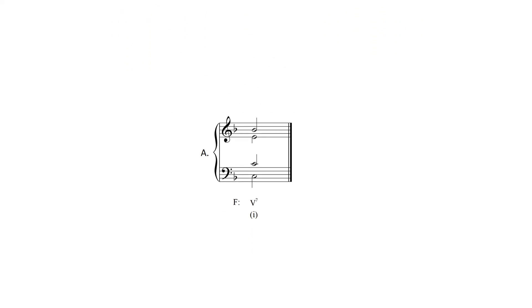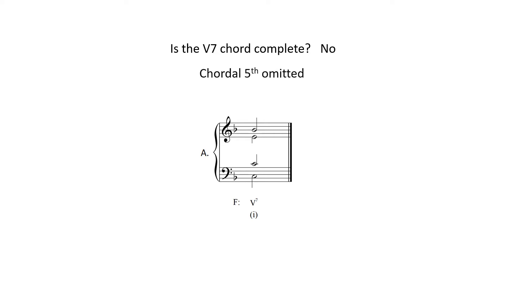When given a 5-7 chord to resolve to tonic, first ask yourself if the 5-7 chord is complete or incomplete. Example A shows an incomplete dominant 7th chord within the key of F major. The chordal 5th, the G, is omitted, leaving a doubled chordal root, a chordal 3rd, and a chordal 7th. If the 5-7 chord is incomplete, as is the case in this example, do the following when resolving to a tonic triad. This is scenario number one.